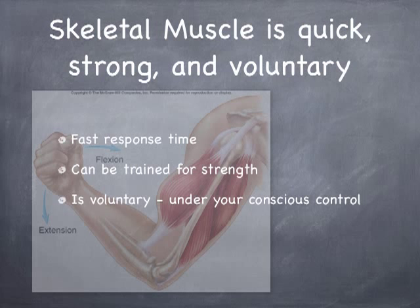The medical and biological terms here are voluntary and involuntary — in the sense that you can volunteer this, you can make it work. Now, the one negative for skeletal muscle is that this muscle type fatigues easily. There are always trade-offs. This muscle can be trained to go on and on, but at some point it does fatigue.